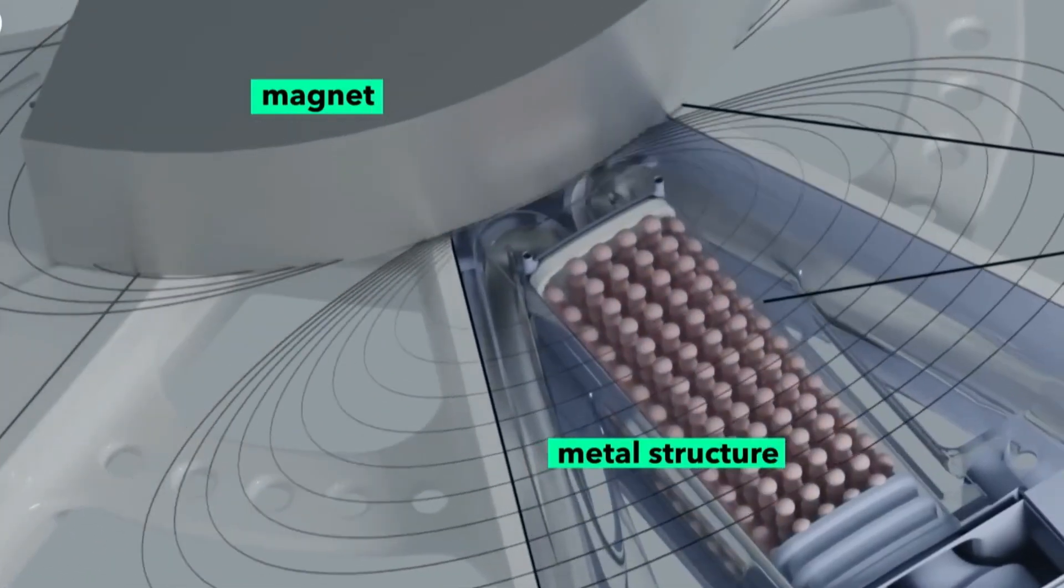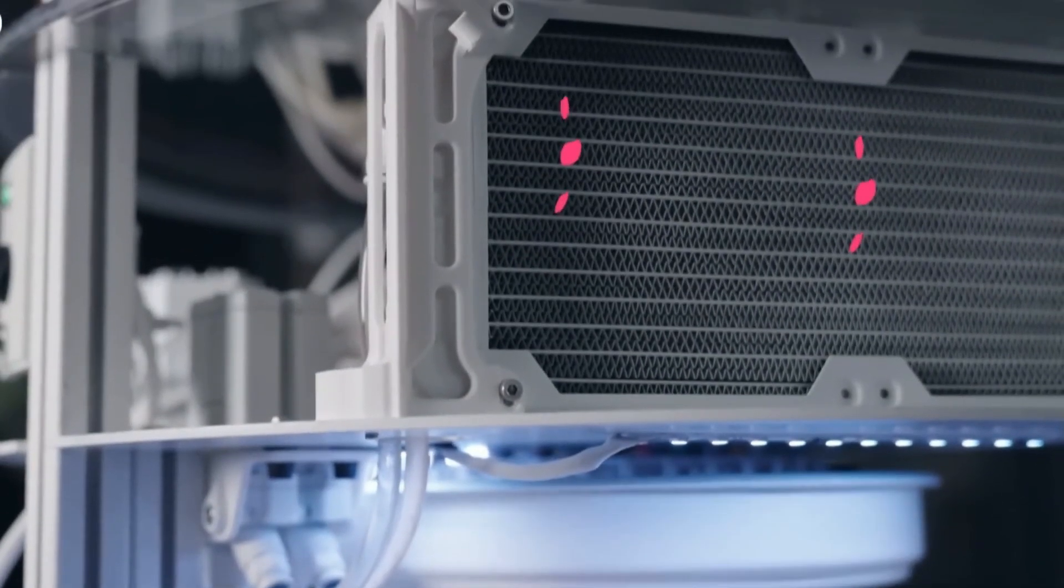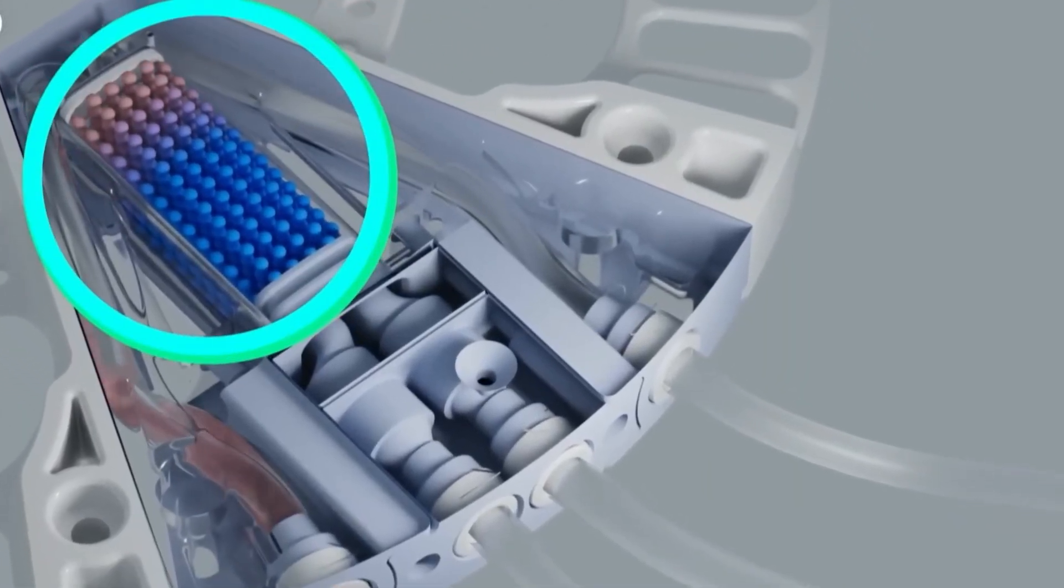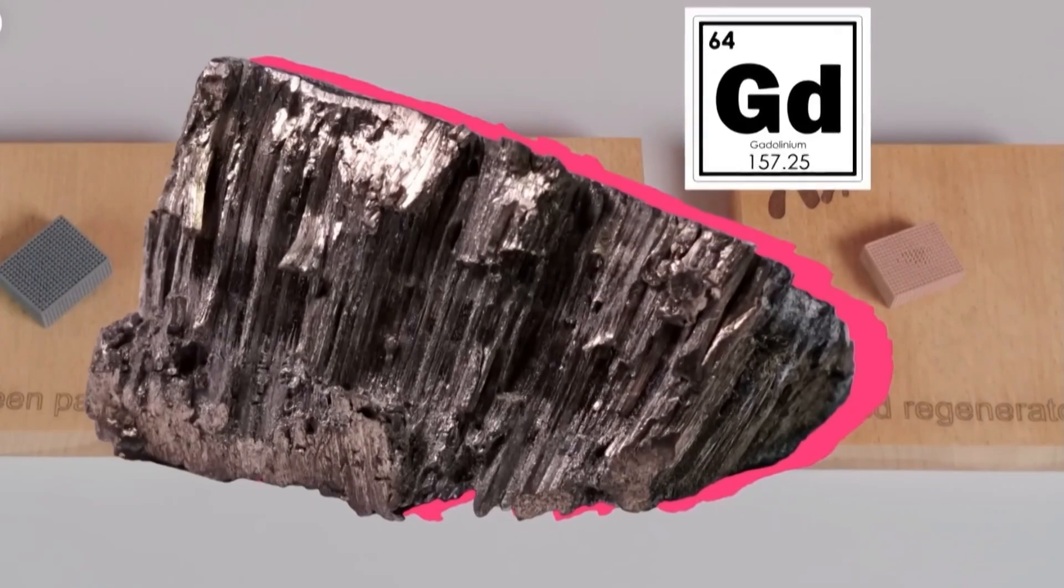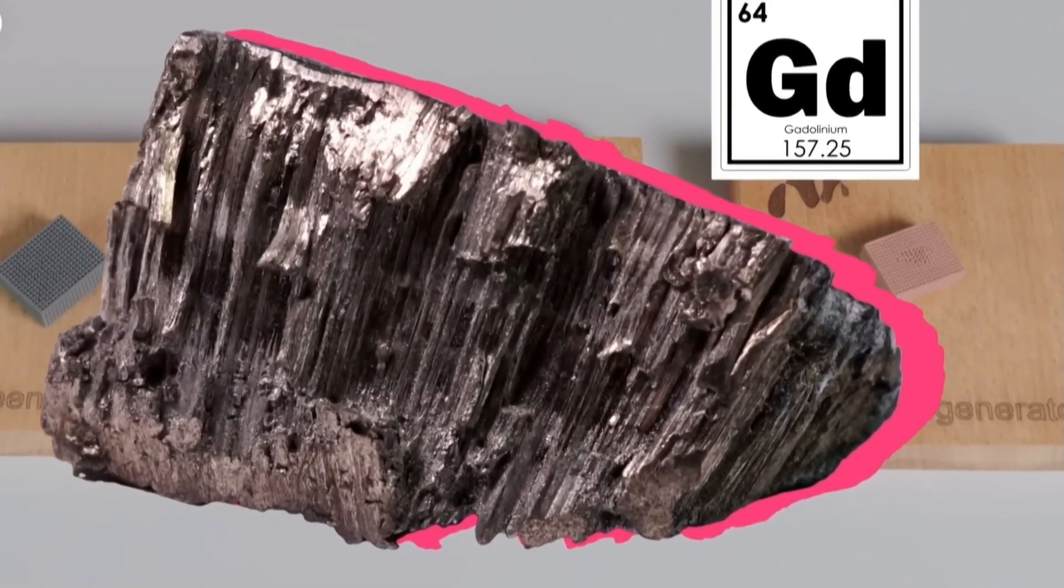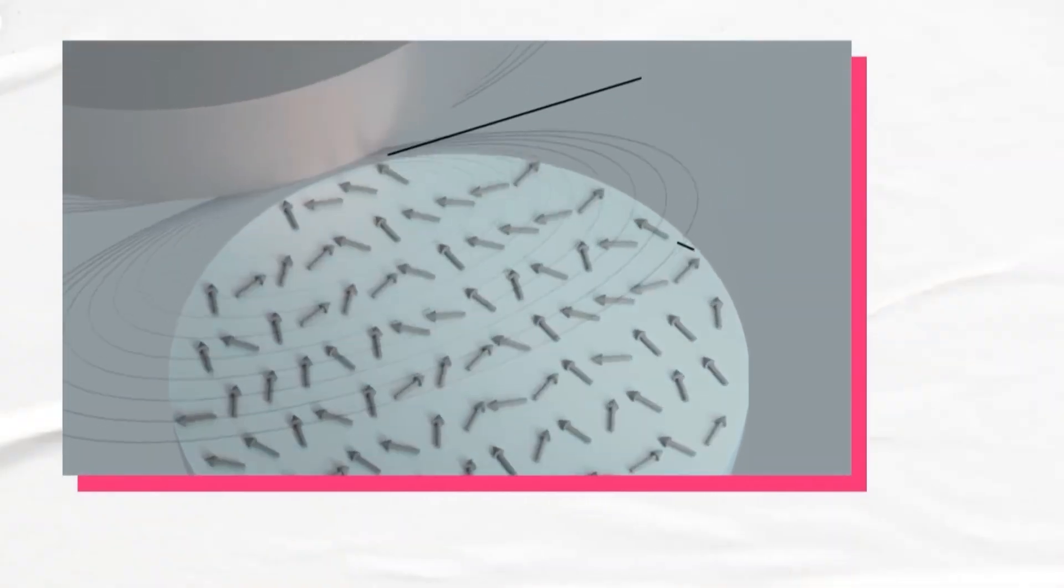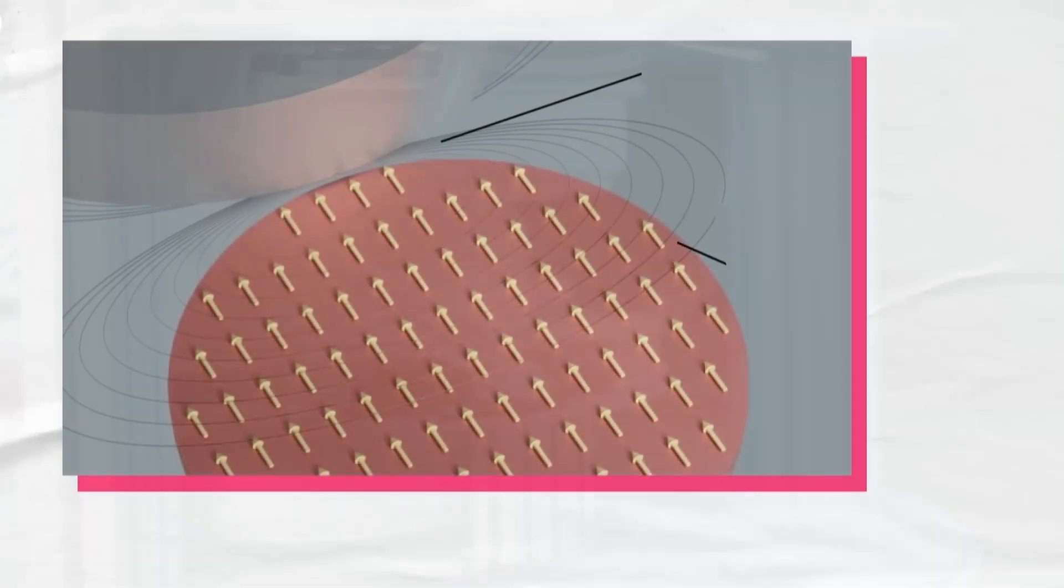Let's dig in. Magnetocalorics follow the same four-step logic as vapor compression, but they swap out refrigerant gas for a solid magnetocaloric material, like gadolinium or LaFeSi lanthanum iron-silicon alloy. Here's how it works. Magnetization: When a magnetic field is applied to the material, it aligns the magnetic domains inside it. This causes the material to heat up.